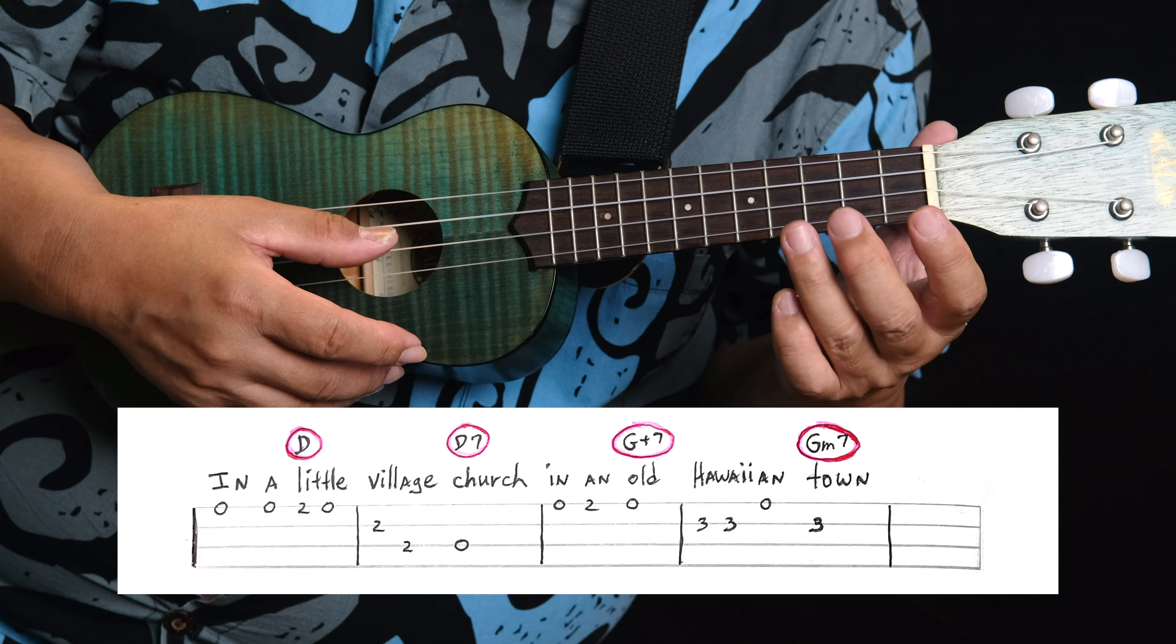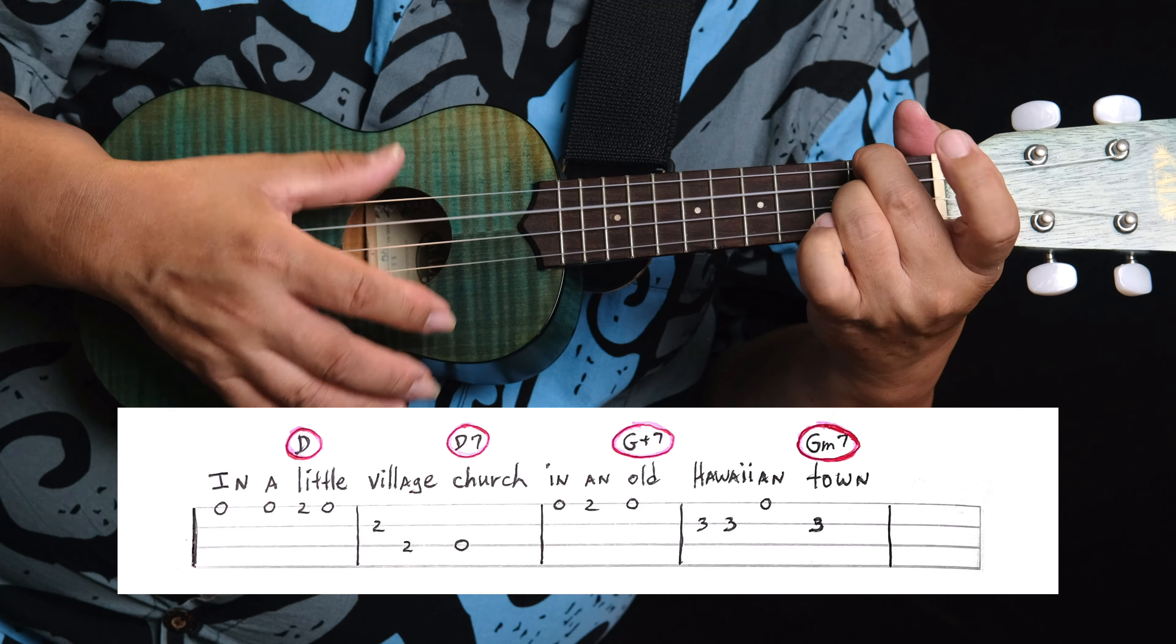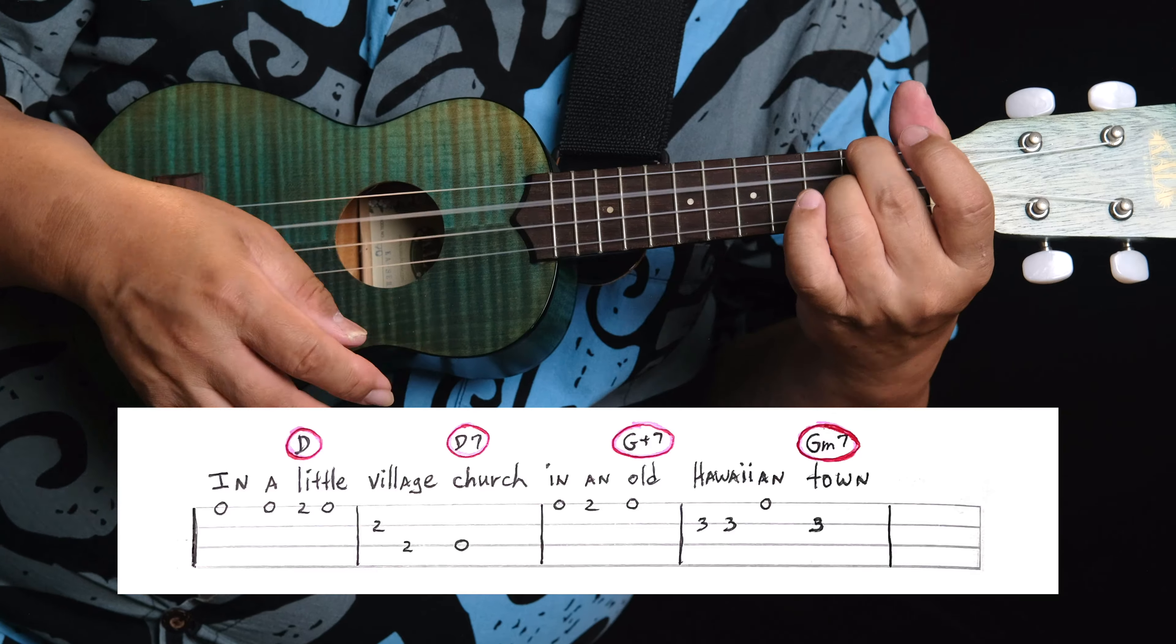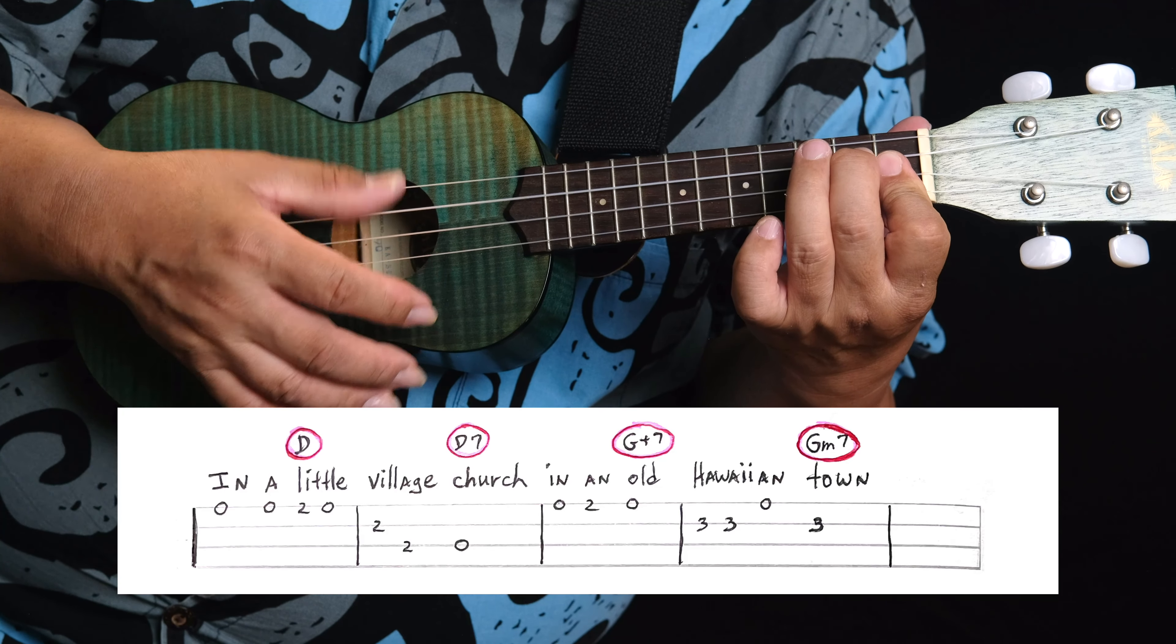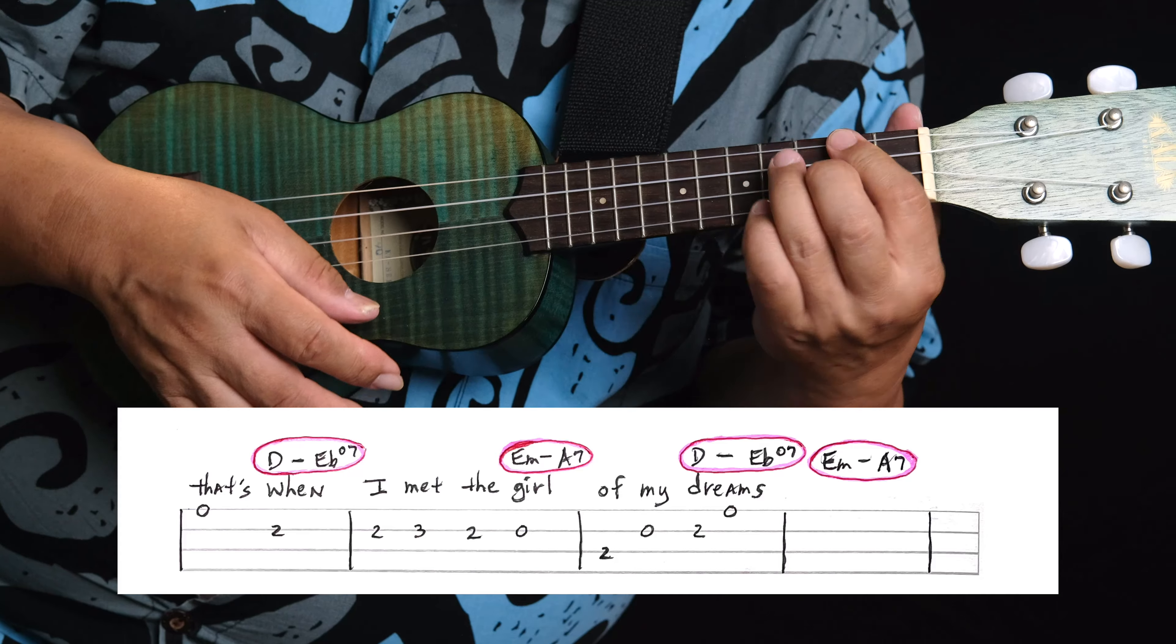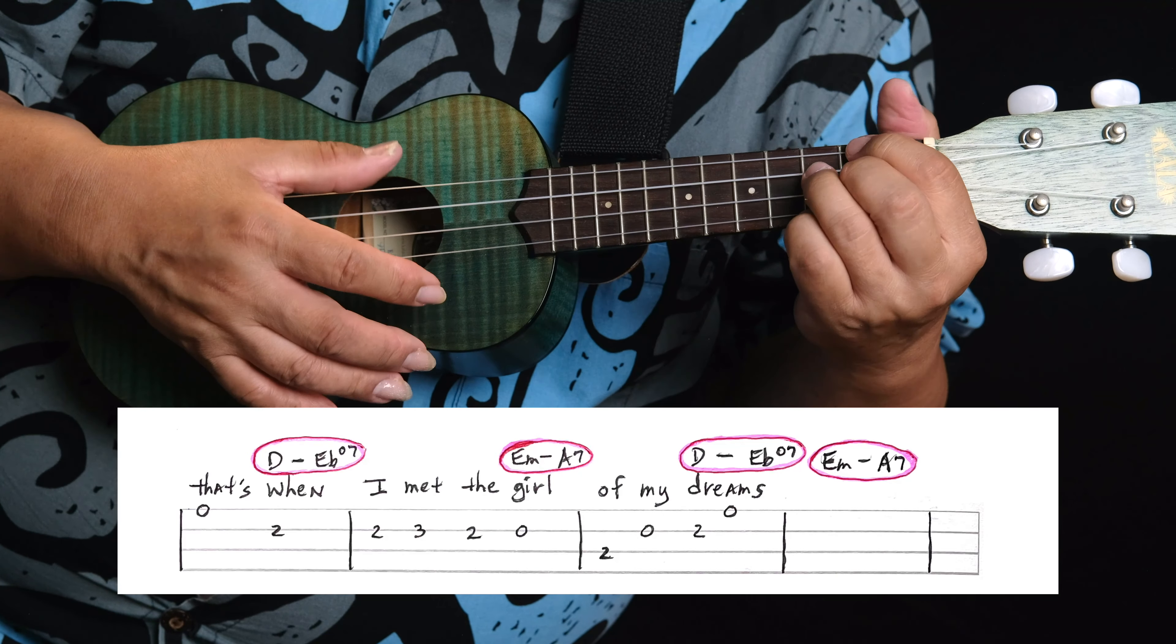Okay, here's the first line with the chords. In a little village church, in an old Hawaiian town. That's when I met the girl of my dreams.